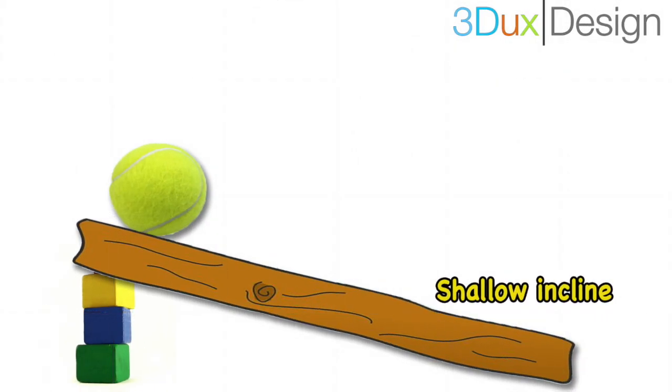Now, not all inclines are the same. They can be kind of low to the ground, or shallow, sort of like the bunny hill when you ski for the first time. You go slow because the slope is shallow.